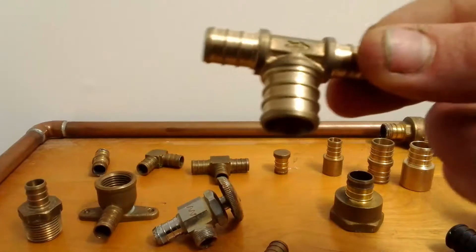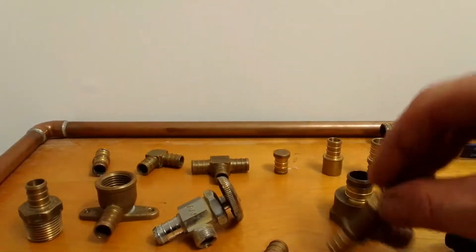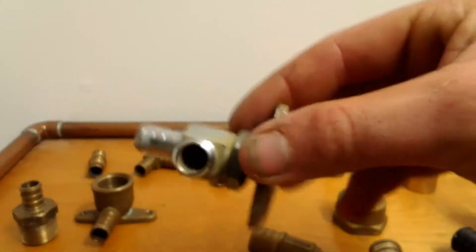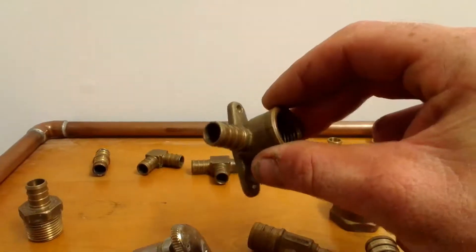Now this here is a combination T. This is a three quarter by half or a half by three quarter. This is the same thing, different one. Half inch shut off. This here is a half inch drop of your 90.